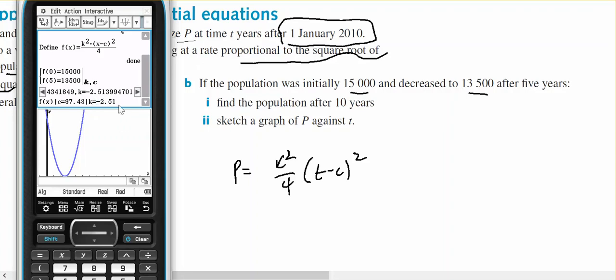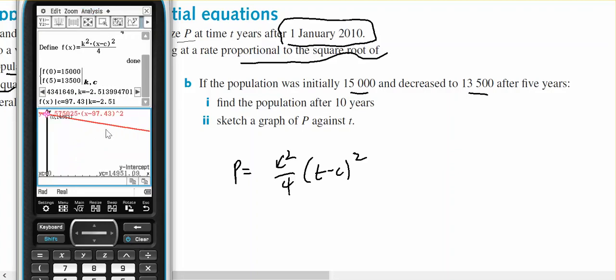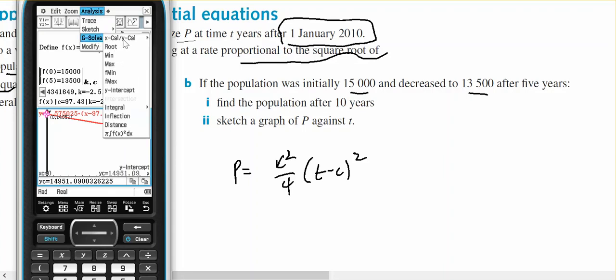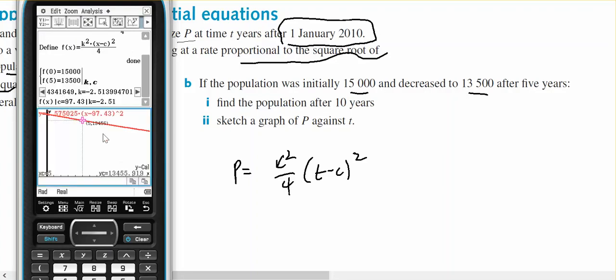And if I take that, drag and drop, I'm pretty happy with that. So if I do analysis, g solve, y intercept, that should give me 15,000 or thereabouts. And if I'm looking for analysis, g solve, y calc when x equals 5, then that gives me my 13,500.